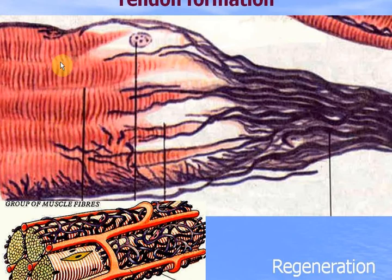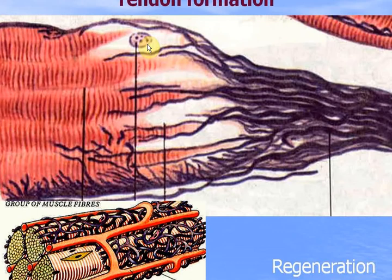After injury of skeletal muscle it can regenerate, because myosatellitocytes — satellite cells — can proliferate, convert to myoblasts. Myoblasts fuse and produce muscle tubules, and they grow and convert to muscle fibers.